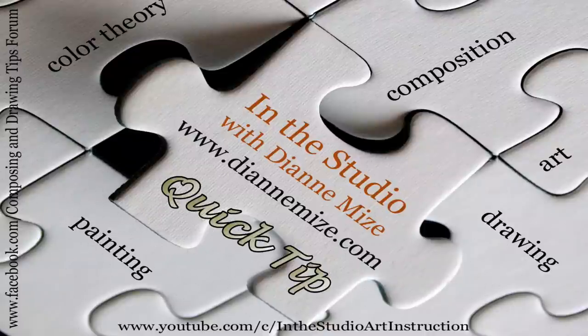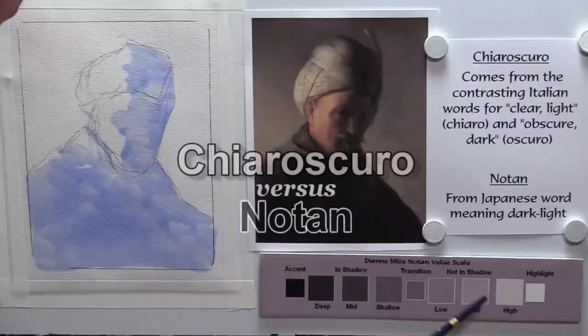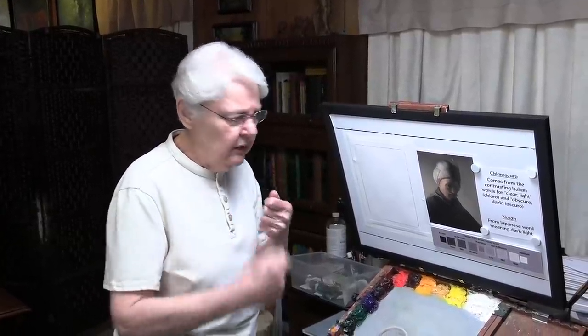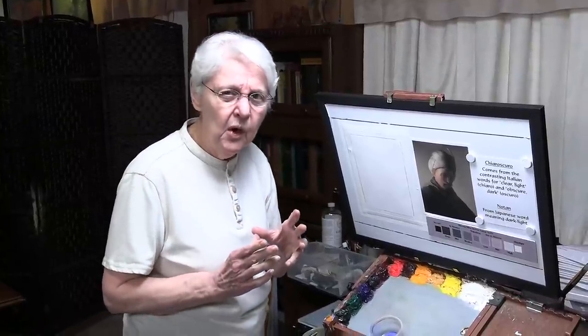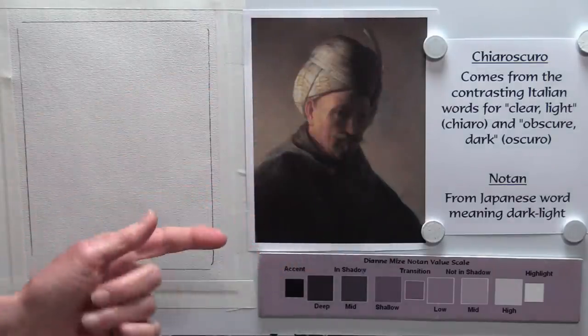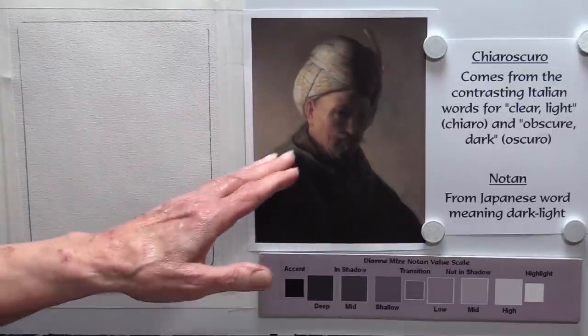Here's a thoughtful question from one of our viewers: What is the difference between chiaroscuro and notan? They both deal with light and dark. Chiaroscuro is a term that started to be used back in the mid-16th century when Rembrandt began to use dramatic lights and darks, and that's become characteristic of his work — one reason why his work has lived throughout the centuries. We can see here in this painting, I think it's called Man with Turban, with dramatic light and dramatic shadows.